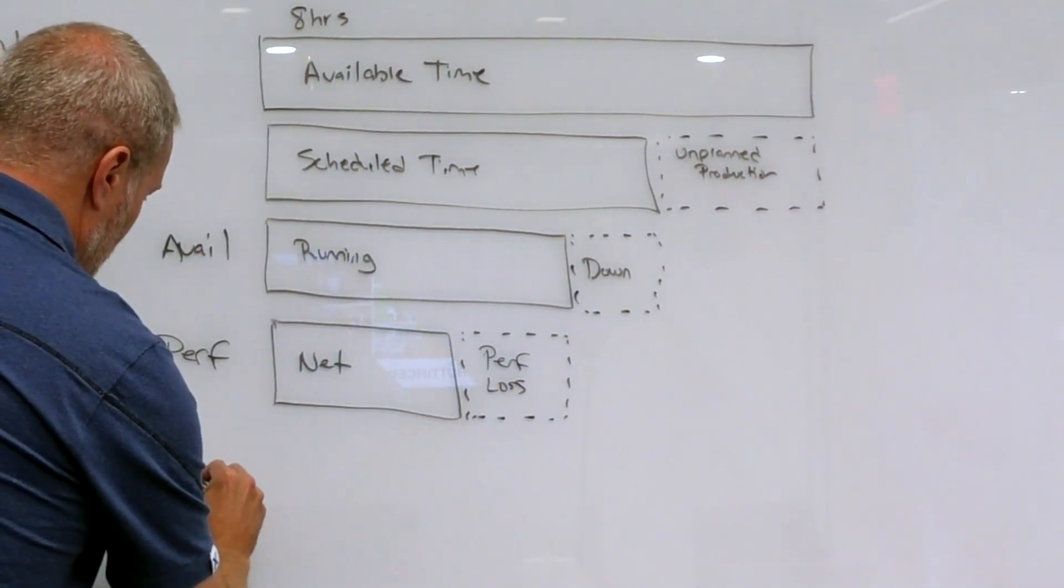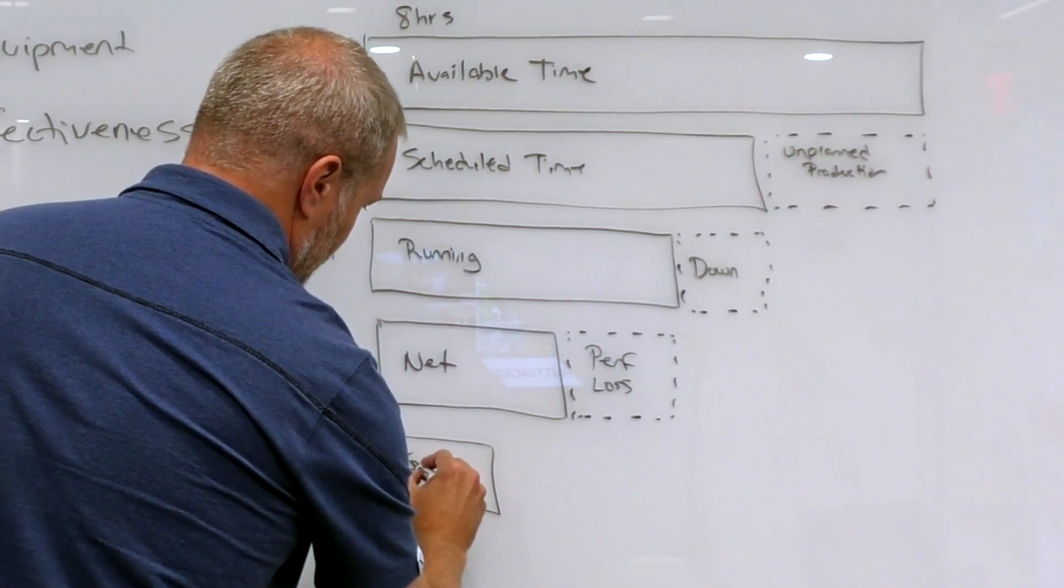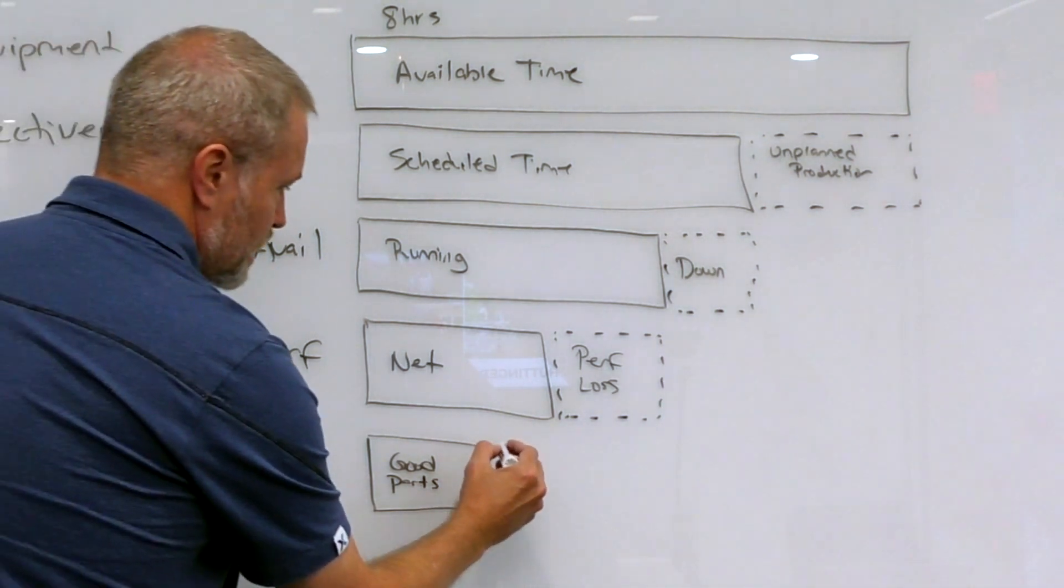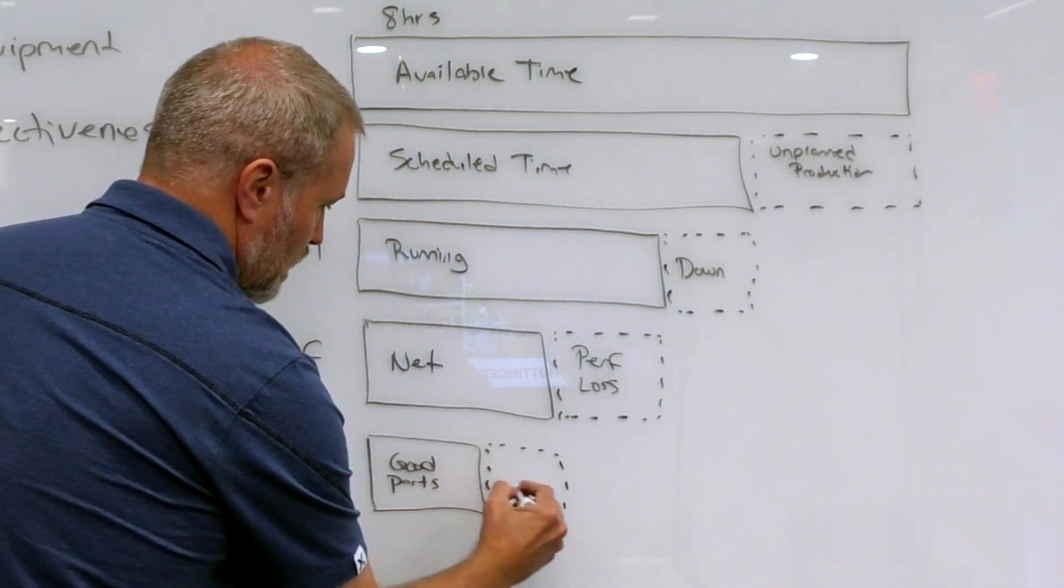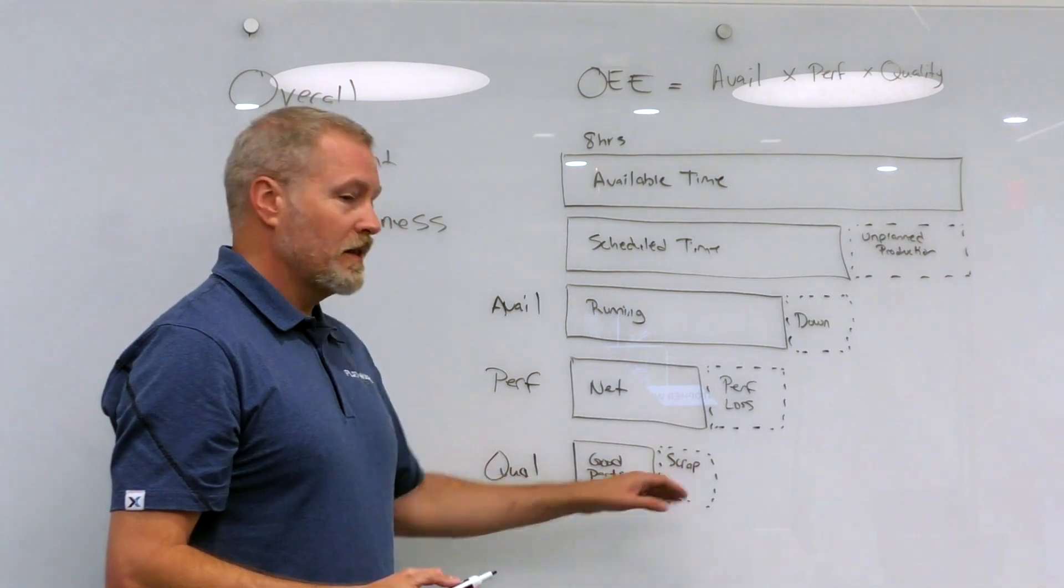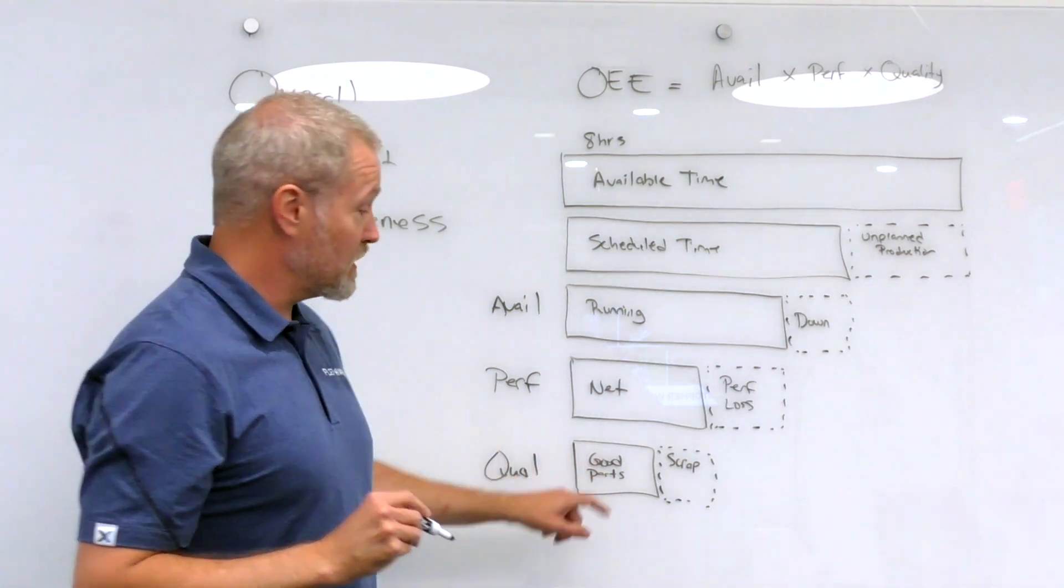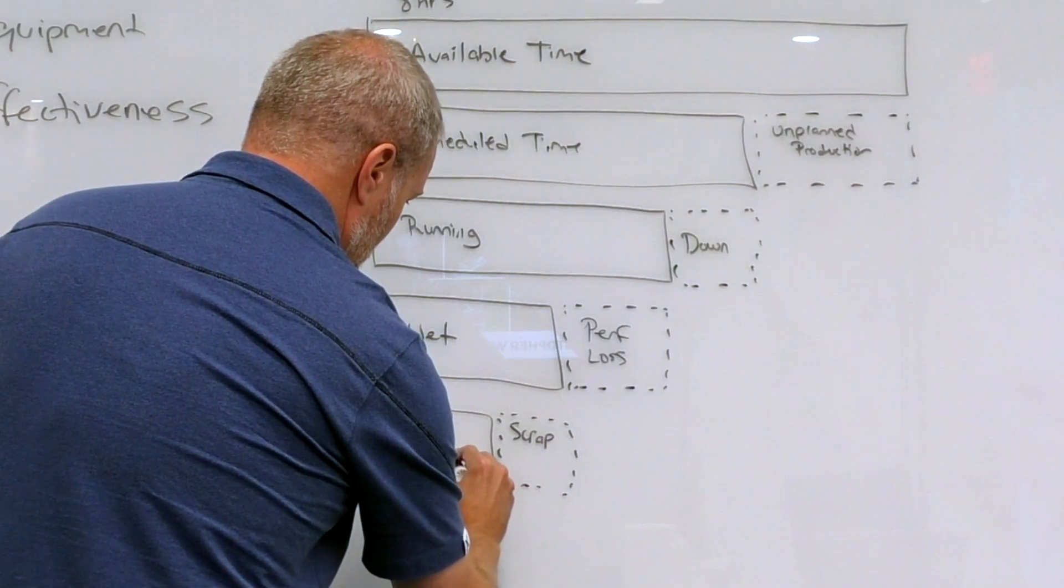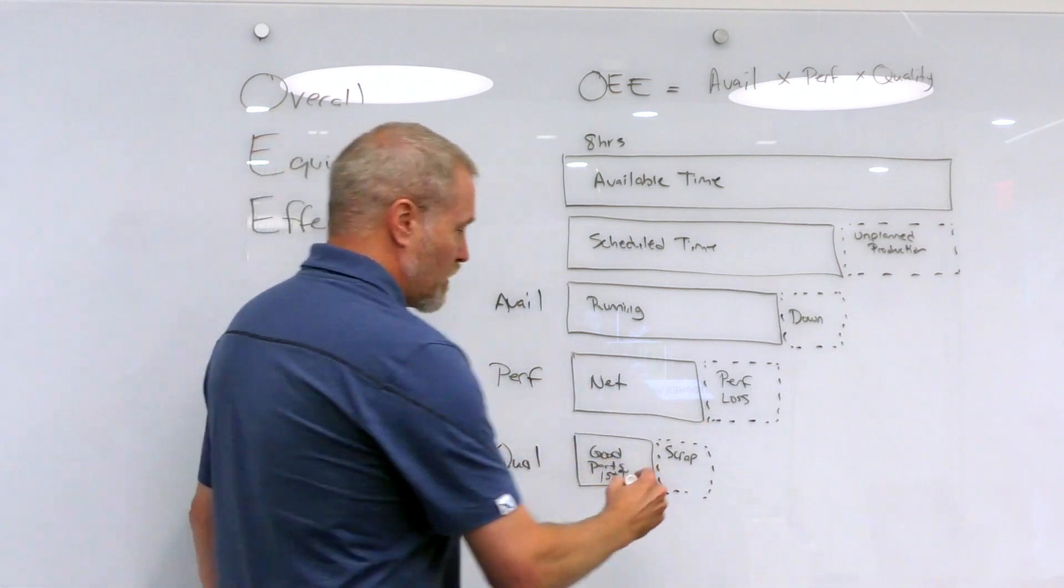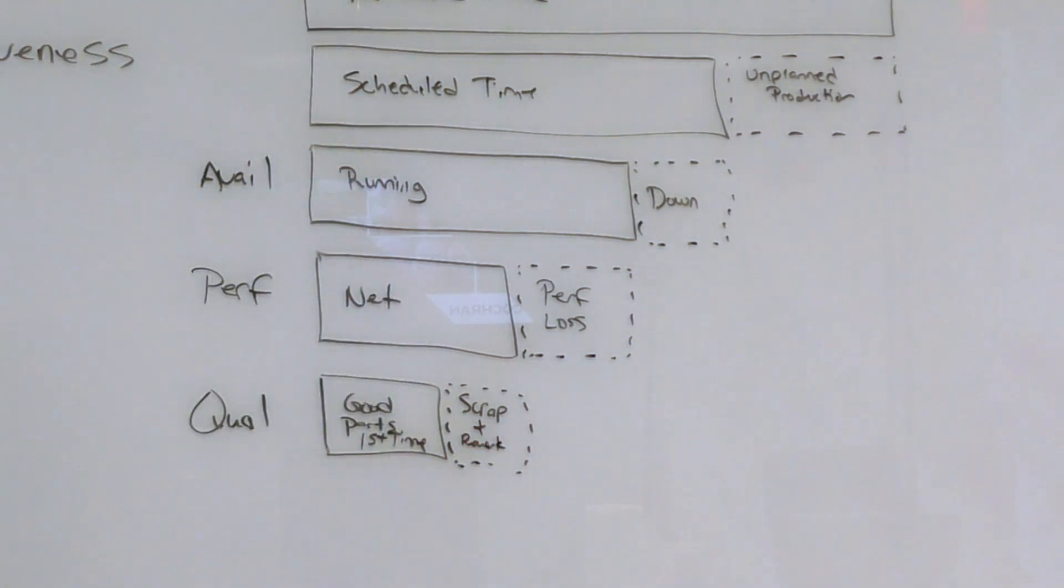Finally, quality is the most intuitive or easiest to calculate. This is looking at good parts produced or assembled or what have you. The loss in quality comes from scrap, also called spoilage. You could also factor in the idea that in some production processes you have the ability to rework product. So this is good parts the first time, which is an important distinction. If I run a part, it's bad, I can rerun it through. There's some loss there. So that could be scrap or rework.